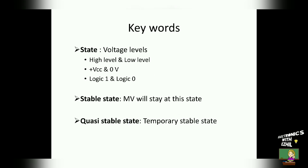Before going into the topic, let me introduce the most important keywords of the multivibrators. They are state, stable state, and quasi-stable state. State is actually voltage levels — they are high level and low level. High level means plus VCC, which is 12 volt for transistorized electronic circuits, and low level is 0 volt. It can also be called as logic 1 and logic 0 in terms of digital electronics.